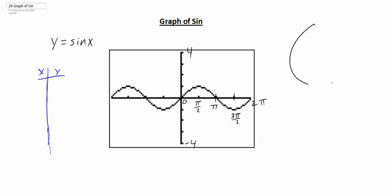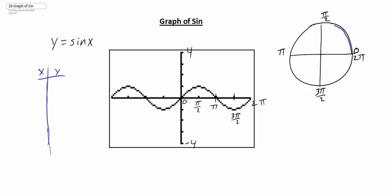If we think of this in terms of our unit circle, basically what we're doing is we're starting here at zero, we have pi over two at the top, pi over here, three pi over two at the bottom, and then we're all the way back to two pi. Notice this is basically one trip around the circle, and this part of the graph then continues. If we went negative, that's where we're getting the left-hand side of this graph.